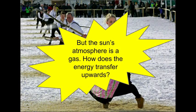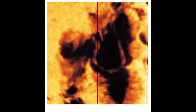The sun isn't a whip obviously. The sun's atmosphere is a gas. And so how does energy transfer upwards through a gas? That puzzled astronomers for many decades until we discovered the answer is magnetism.